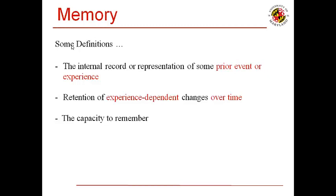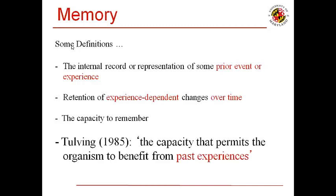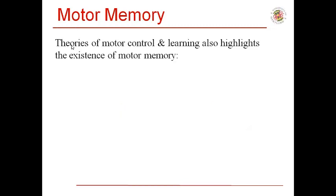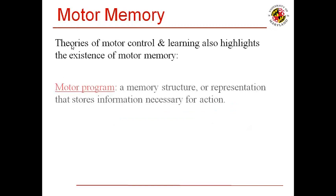Informally speaking, we refer to memory as retention or the capacity to remember. However, Dr. Tulving provides a more holistic definition and defines memory to be the capacity that permits the organism to benefit from past experiences. This definition can be related to both verbal and motor memory. However, the more customized and precise definition of motor memory is given by Schmidt and Lee. They state that motor memory can be defined as the persistence of the acquired capability for motor performance. The existence of such motor memory is also highlighted in theories of motor control and learning, as depicted in the motor program theory and the schema theory.